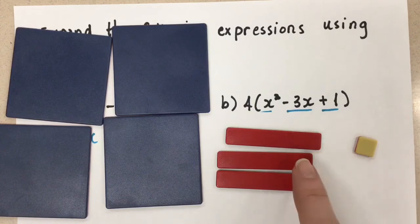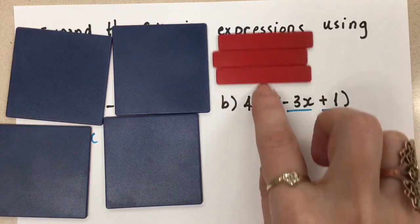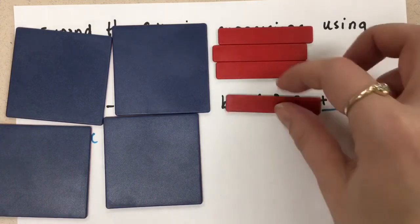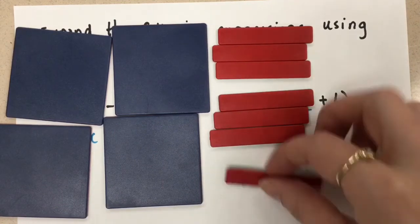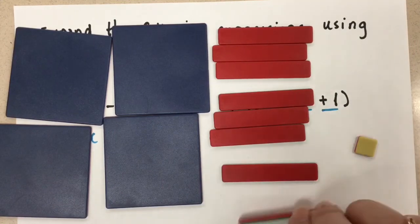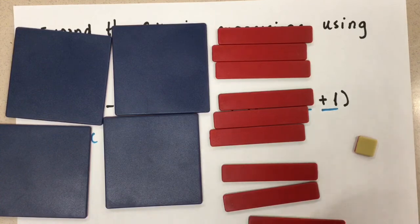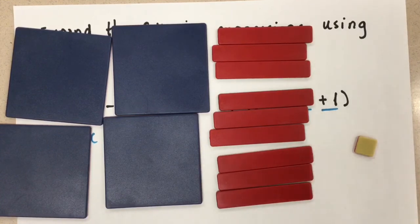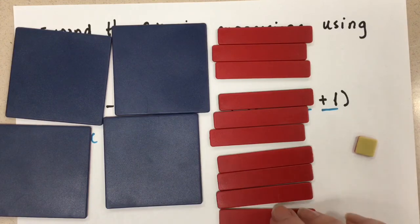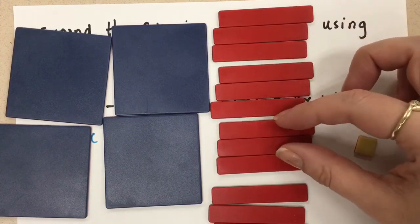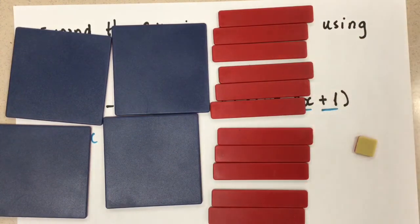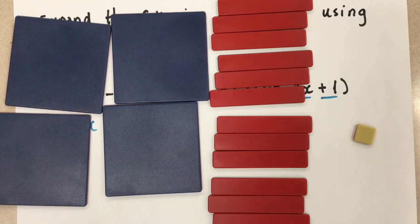4 times these 3 negative x's means I need 4 of these groups. So that's 1, 2, 3, and 1 more. Can we squeeze them in? So we had one group, two groups, three groups, four groups of the negative x's.